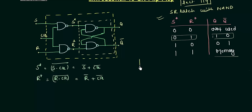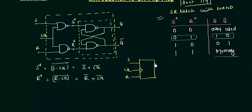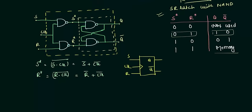The SR flip-flop is represented by a box symbol. This whole circuit is inside this box and there are three inputs: S, R, and clock. The arrow-type symbol on the clock input represents that it is edge triggered. If the arrow is not there, it represents it is level triggered. There are two outputs: Q and Q complement. This is the symbol for your SR flip-flop.